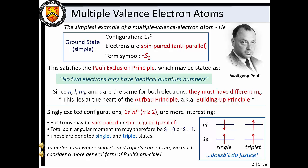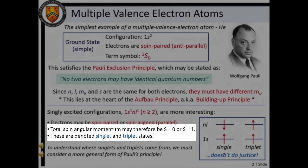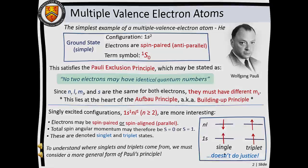Singly excited electronic configurations of helium are more interesting. Now the electrons may either be spin-paired or spin-aligned, which means that the total spin angular momentum quantum number is either 0 or 1. This leads to values of 2S+1 equals 1 or 2S+1 equals 3, which we refer to as singlet and triplet excited states. To understand where the concept of singlet and triplet states comes from, we must consider a more general form of Pauli's principle.